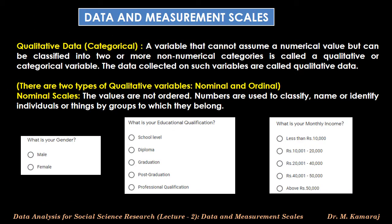Qualitative data is otherwise called categorical data. If a variable cannot assume a numerical value but can be classified into two or more non-numeric categories, it is called a qualitative or categorical variable. The data collected on such a variable are called qualitative data. There are two types of qualitative variables: nominal scales and ordinal scales. In the nominal scale, the values are not ordered. Numbers are used to classify, name, or identify individuals or things by groups to which they belong. For example, 'What is your gender?' — male or female. In statistics, number 1 may be used for male and 2 for female.